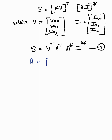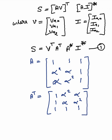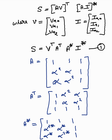We already know that A equals [1, 1, 1; α², α, 1; 1, α, α²]. The A transpose is [1, α², α; 1, α, α²; 1, 1, 1]. The A conjugate equals [1, 1, 1; α²*, α*, 1; α*, α²*, 1], where α²* denotes the conjugate of alpha squared and α* denotes the conjugate of alpha.